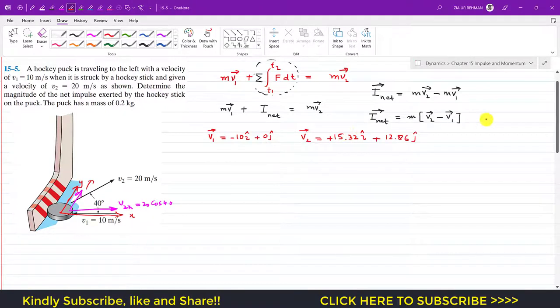So now we can find, we can use this equation to find that net impulse which is transferred by the hockey to the puck. So that is I_net equals mass, which is 0.2 kg, times v2, this is v2, that is 15.32i plus 12.86j, minus v1.